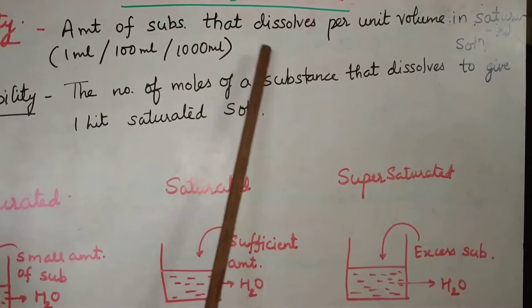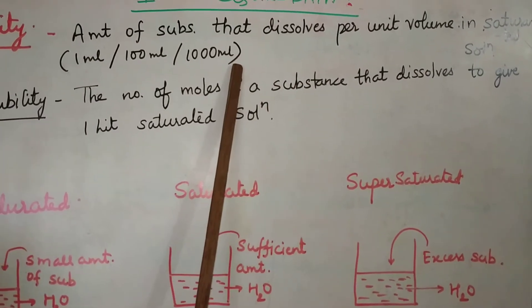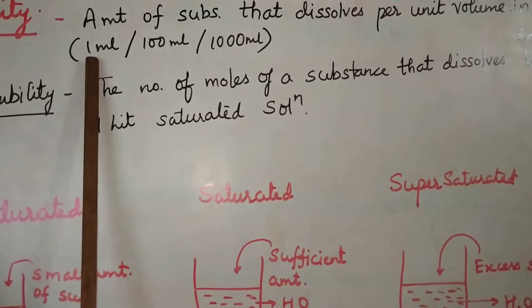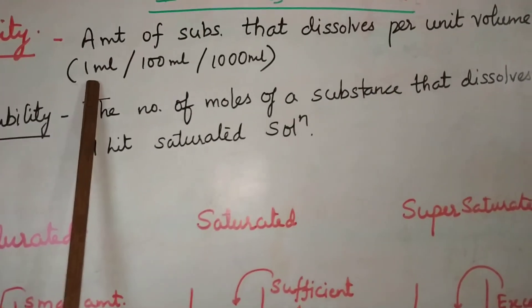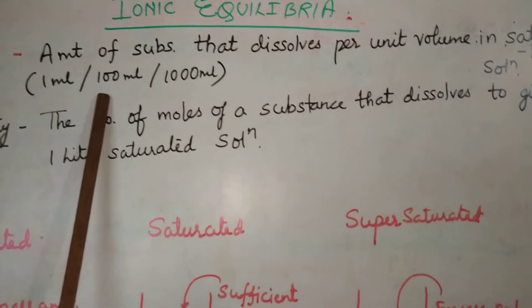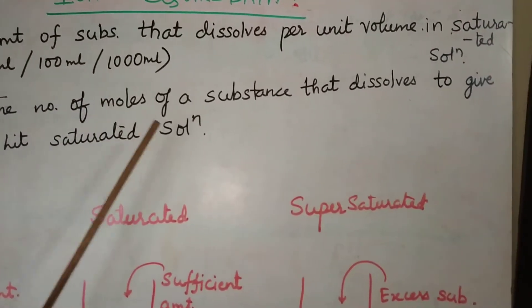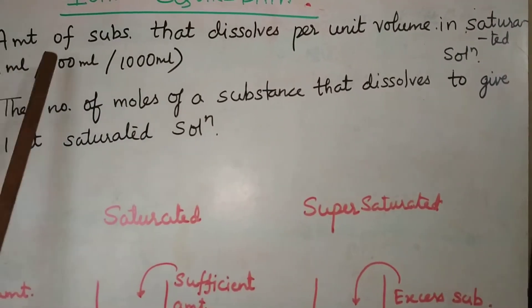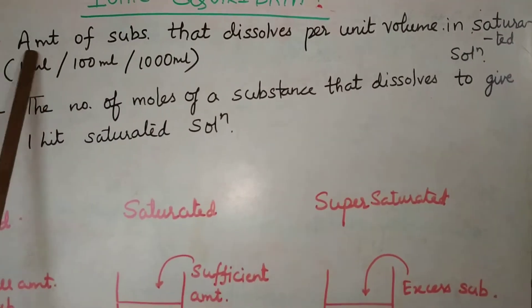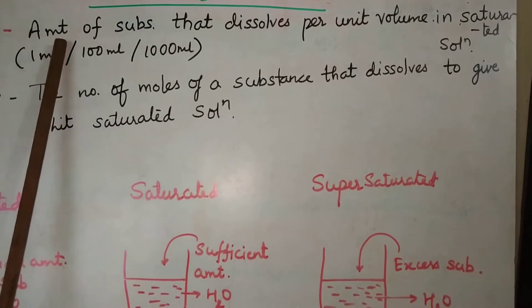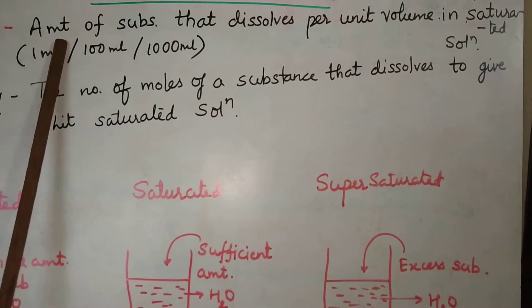In a formed saturated solution, the amount of substance per 1 ml, per 100 ml, or per liter is solubility. That amount is measured in grams.